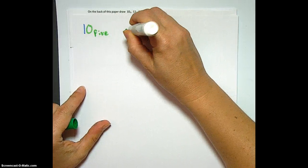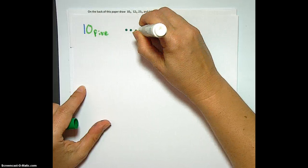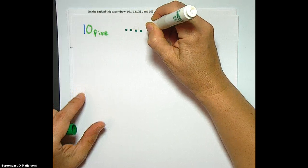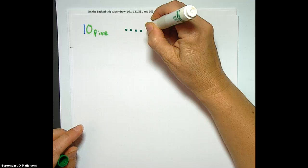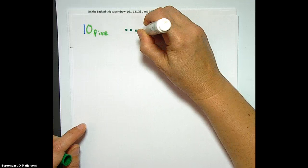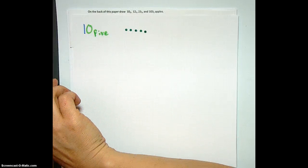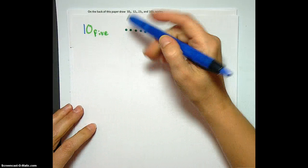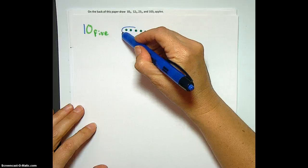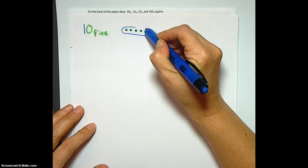1, 2, 3, 4, and then what's after 4, Ariel? 10 base 5. 10 base 5, because now we bundle that group. And we've got 10 base 5 apples.